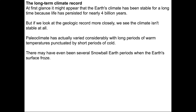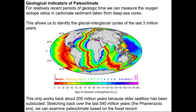There may have been several snowball Earth episodes when Earth's surface froze over completely — the most extreme example of climate change. For relatively recent geologic time, we can measure oxygen isotope ratios in carbonate from deep-sea cores, allowing us to clearly identify the glacial-interglacial cycles of the last three million years — Emiliani first did this in the 1950s at the University of Chicago. This works well for about 200 million years, but beyond about 150 million years ago we don't have seafloor sediment, so we move to shallow platform sediment deposited on the continents.